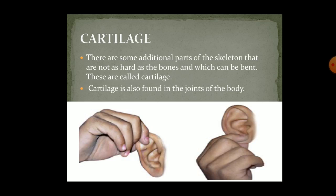Next comes the cartilage. Cartilage is a material which is not as hard as bone but is not very soft either. There are some additional parts of the skeleton that are not as hard as bone and which can be bent — these are called cartilages, and cartilage is also found in the joints of bones. A picture shows where cartilage is usually found, such as in our ears. The upper part of the ear has cartilage, whereas the lower part is known as the ear lobe.